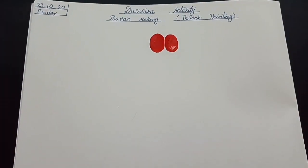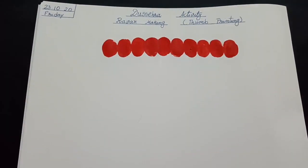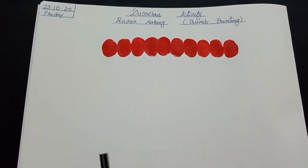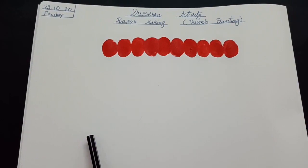Children, do you know how many heads Ravan had? Yes, ten. So let's make ten heads. So children, I have made ten heads of Ravan here. Could you also make it? Let's now put it to dry for ten minutes.